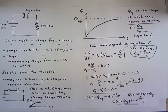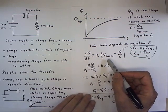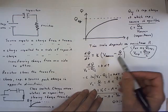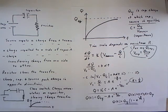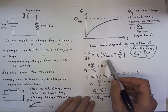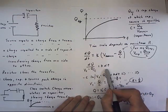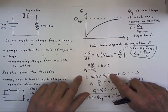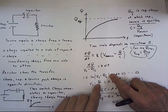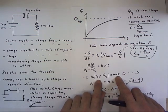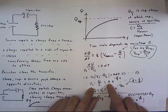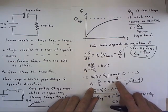The point is, it's the difference between the push of the source and the push of the capacitor in the opposite direction that determines the rate at which charge accumulates on the capacitor. This is a simple differential equation which we solve by separation of variables — we divide by the factor in parentheses, multiply through by dt, and perform the integral. You can verify that taking the derivative of the result gives back the reciprocal of (Vs minus Q over C). We end up with Vs minus Q over C equal to some constant times e to the negative K over C times t.